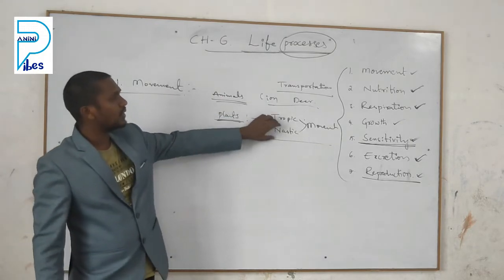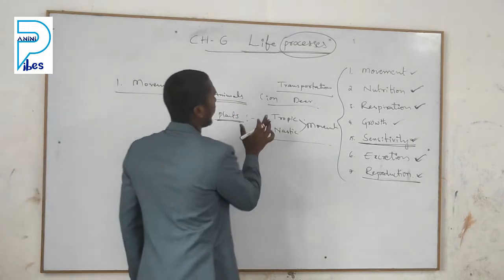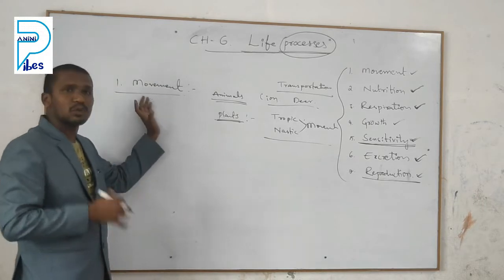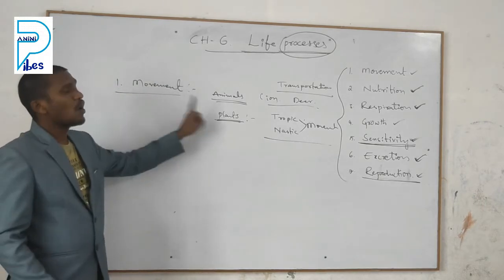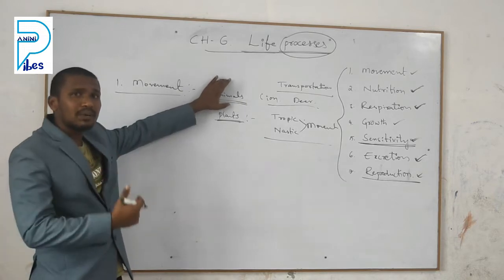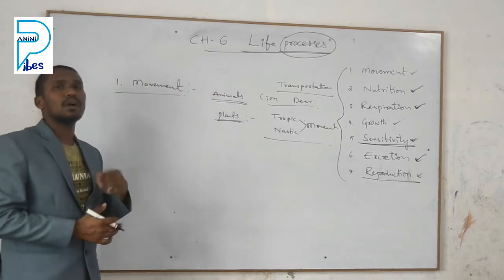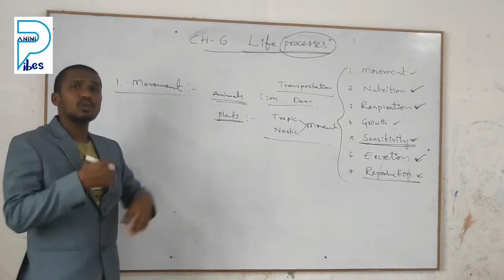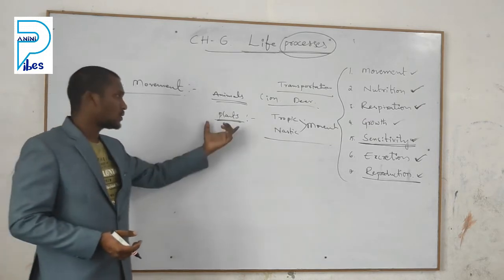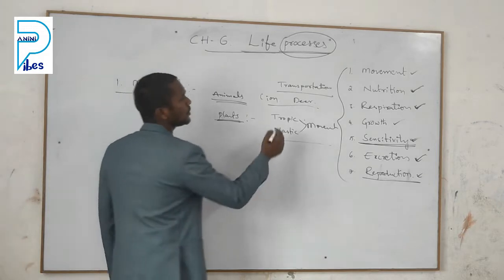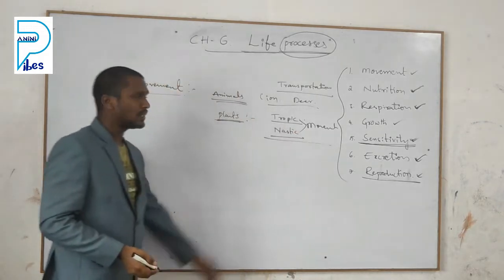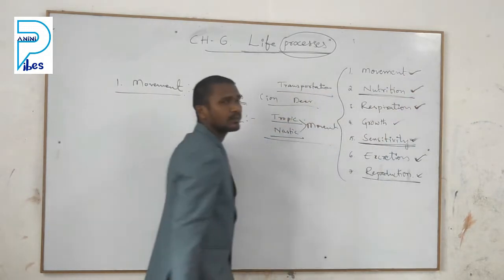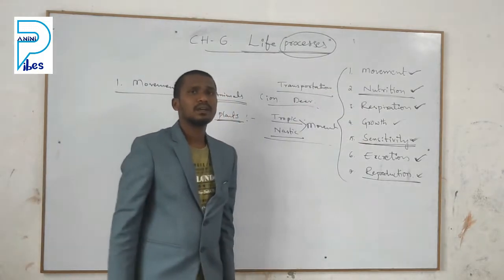We will discuss tropic and nastic movement in detail in the next classes. Movement involves changing direction and moving from one place to another. In animals, one animal follows another for the sake of nutrition. Plants also show movement, differentiated into two types: tropic movement and nastic movement. That covers movement, and next is nutrition.